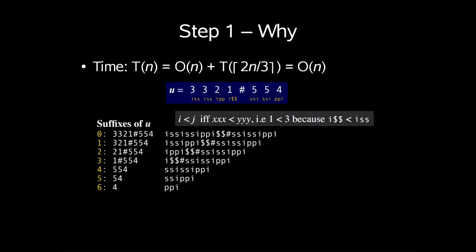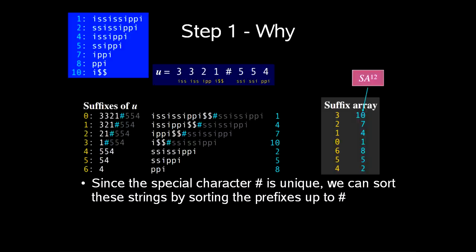Now why do we set u to be this concatenation of lexicographical names and this special character? Well first determine the suffixes of u and to its right is the lex names expanded to corresponding prefixes of length 3. Now we could do a new comparison if xxx is less than yyy, so in example 1 is less than 3 because i$$ is less than iss. And since the special character hash is unique and occurs in unique positions we can sort these strings by sorting the prefix of u up to the hash sign. So we have our suffix array and our SA1-2 which is the blue on the right.